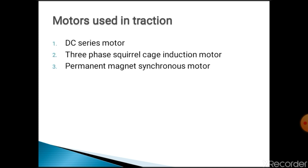Next, we will move on to motors used in traction systems. There are three types of motors: DC series motor, three-phase squirrel cage induction motor, and permanent magnet synchronous motor. The DC series motor develops high starting torque, which is an essential requirement for traction service. Due to its simplicity and robustness, the DC series motor is suitable for all types of traction service.